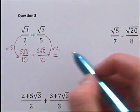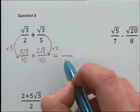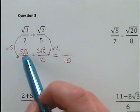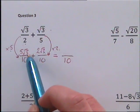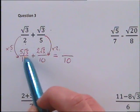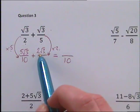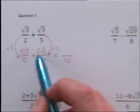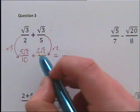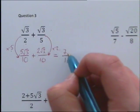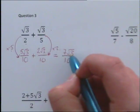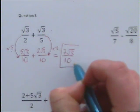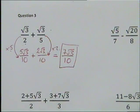Then we're just going to add them together, so our bottom number stays the same — we're still going to have 10 on the bottom. We've got five root 3s, add another two root 3s. So 5 plus 2 is 7 root 3, and that's our answer for the first one.